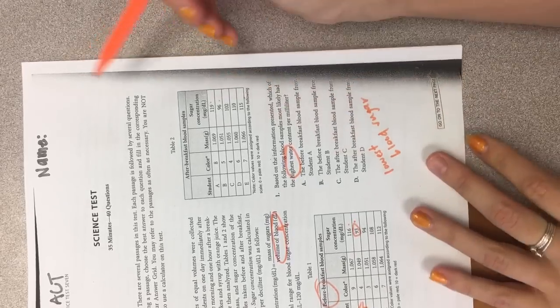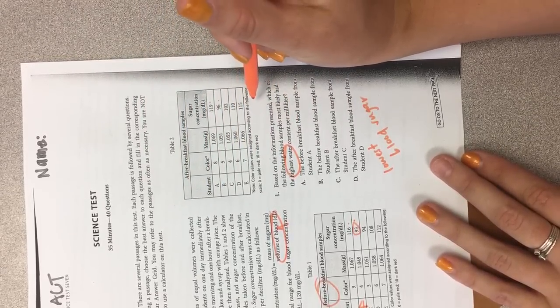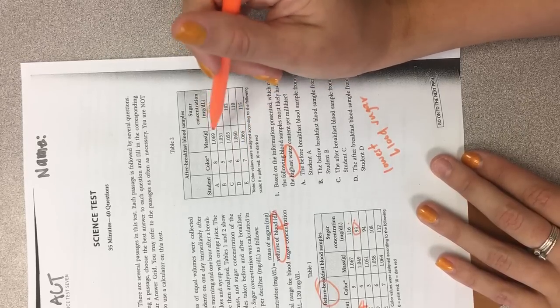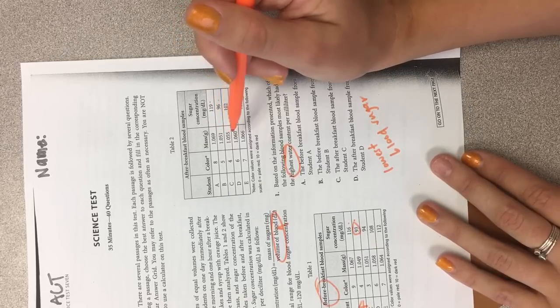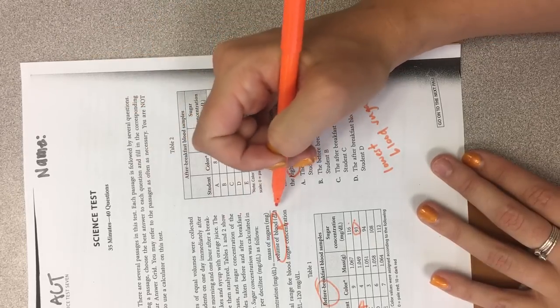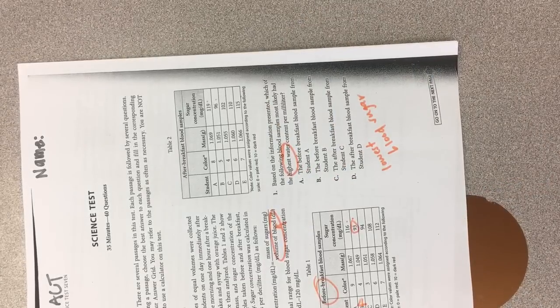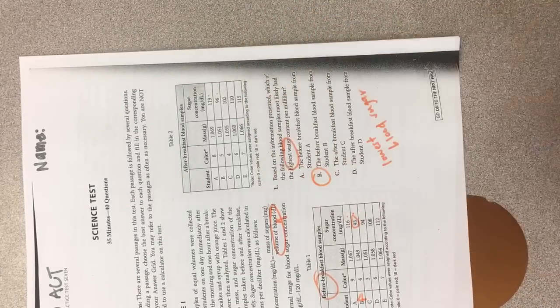Let's see, color values were assigned. Zero is pale red, dark red, dark red, dark red, sugar concentration, the after breakfast. Yep, so the correct answer for number one is B.